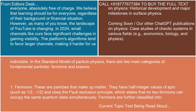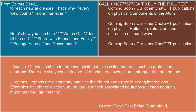Fermions are particles that make up matter. They have half-integer values of spin, such as one-half and minus one-half, and obey the Pauli exclusion principle, which states that no two fermions can occupy the same quantum state simultaneously. Fermions are further classified into quarks, which combine to form composite particles called hadrons, such as protons and neutrons.